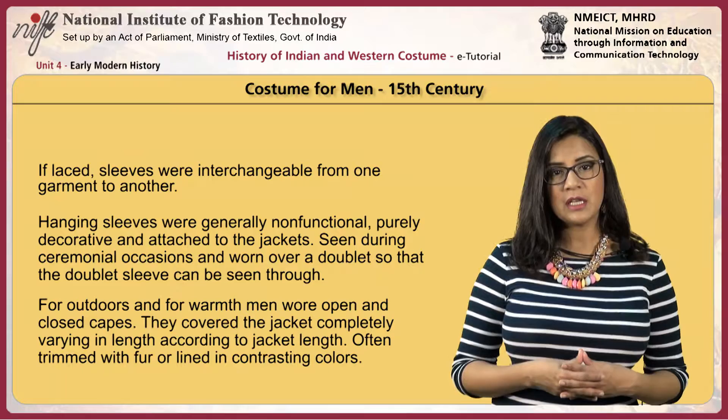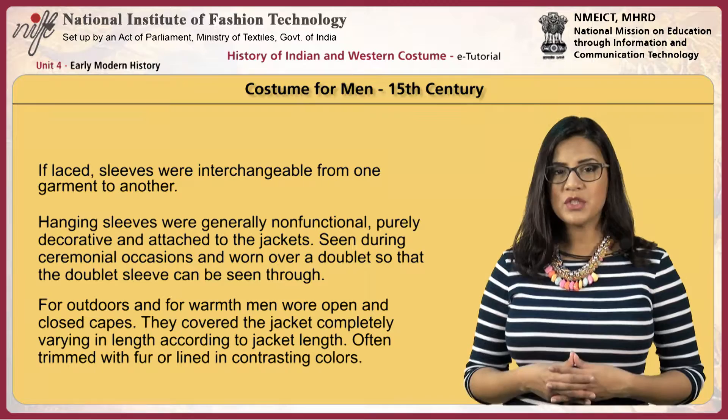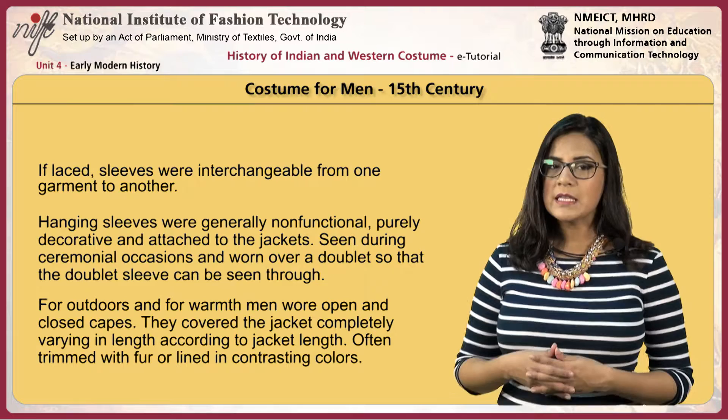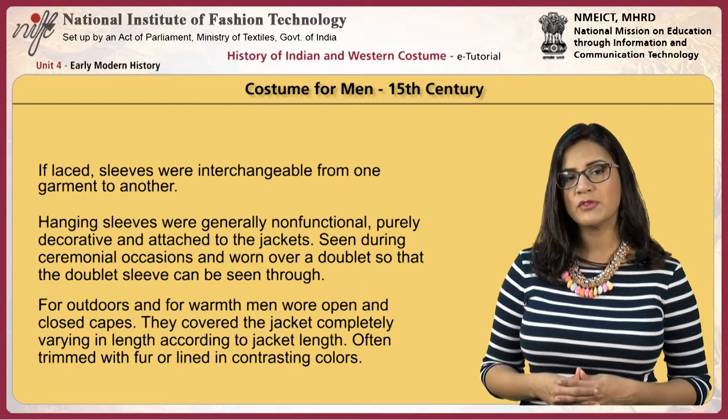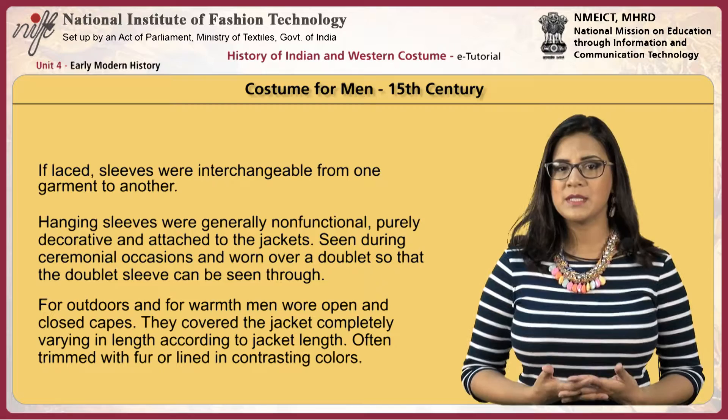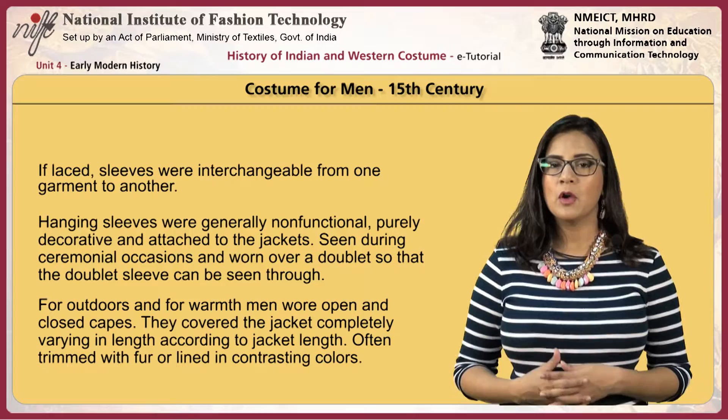Hanging sleeves were generally non-functional, purely decorative and attached to the jackets. They were seen during ceremonial occasions and worn over a doublet so that the doublet sleeve could be seen through. For outdoors and for warmth, men wore open and closed capes. They covered the jacket completely, varying in length according to the jacket length, and were often trimmed with fur or lined in contrasting colors.